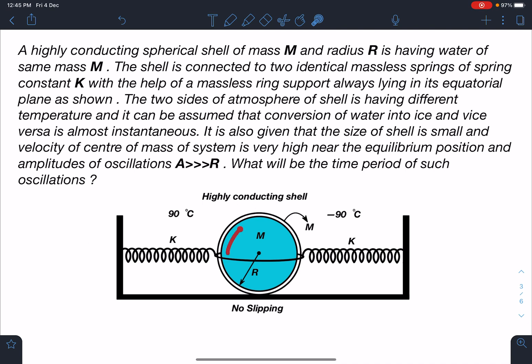It is given to us in the problem, so for this part the frozen ice will behave like a solid sphere. It is also given that the size of the shell is very small. I'll tell you why it is given. If the size is negligible and the velocity of center of mass is very high near the equilibrium point...